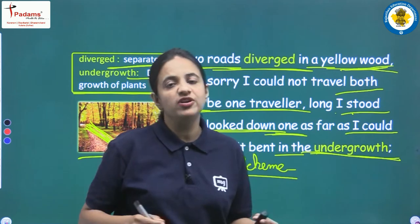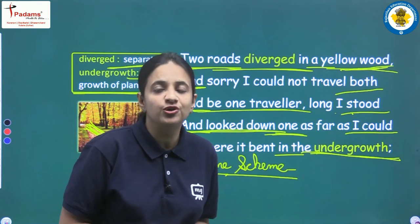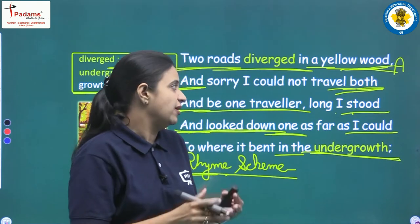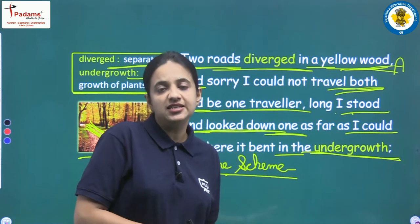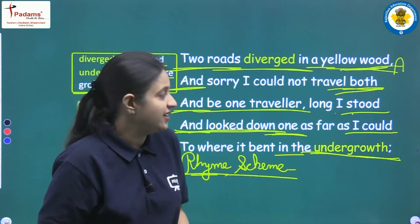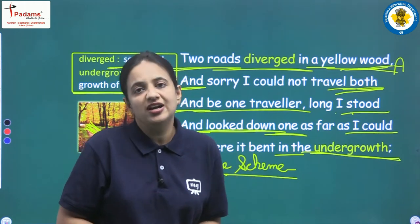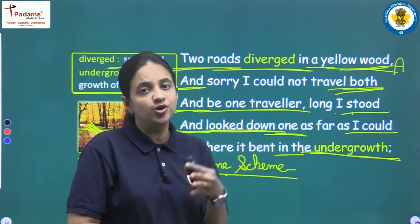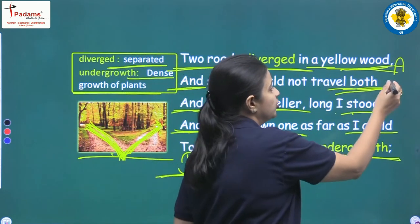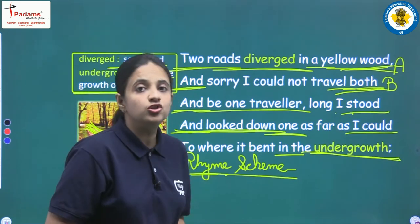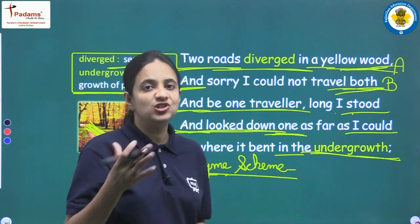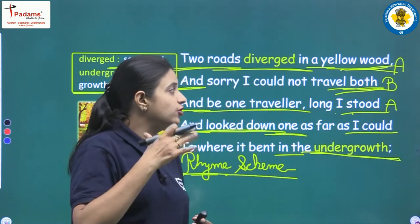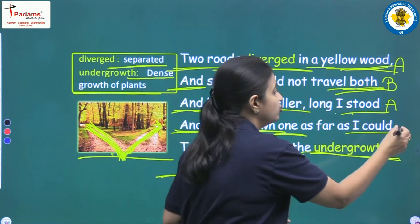The second line ends with 'both' — comparing 'wood' and 'both', they have no similarity — so 'both' is marked B. 'Stood' sounds like 'wood', so it is A. 'Could' also sounds similar, so it is A. 'Undergrowth' rhymes with 'both', so it is B. The rhyme scheme of the first stanza is A-B-A-A-B, and this same scheme continues throughout all four stanzas of the poem.